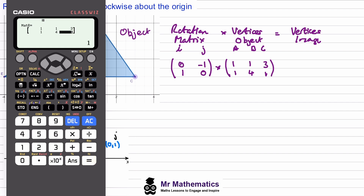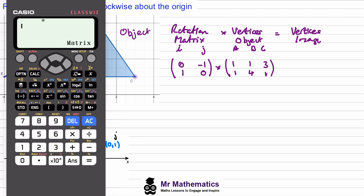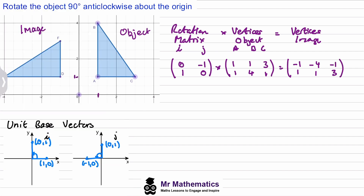We choose option 3 for matrix calculations, then compute matrix A multiplied by matrix B. This gives us the vertices of the image: (-1, 1), (-4, 1), and (-1, 3). You can see that (-1, 1) is coordinate D, (-4, 1) is coordinate E, and (-1, 3) is coordinate F.